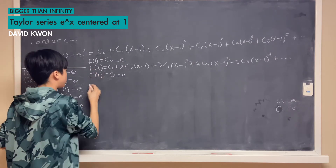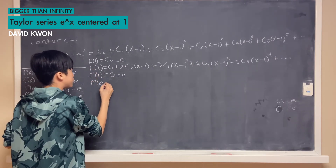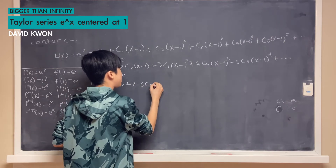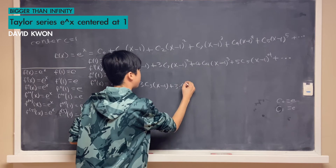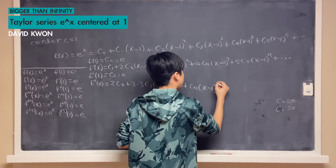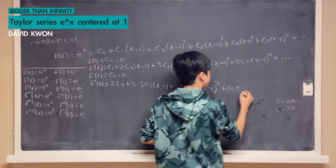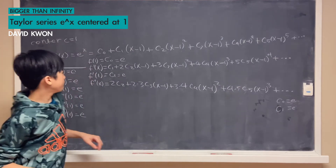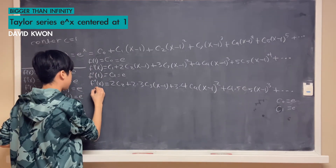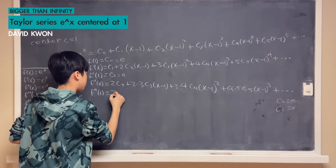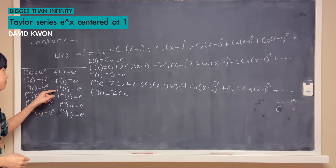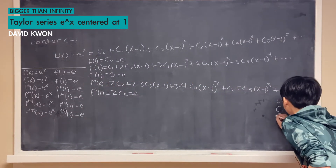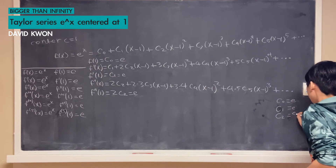Again we differentiate, now differentiating f prime of x. Then we have f double prime of x, which is equal to 2 times c sub 2, plus 2 times 3 times c sub 3 times (x minus 1), plus higher-order terms. Setting x equal to 1, we have just 2 times c sub 2. And since f double prime of 1 is equal to e, our value for c sub 2 is equal to e over 2.